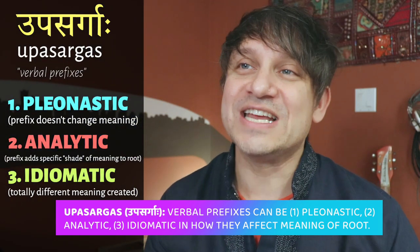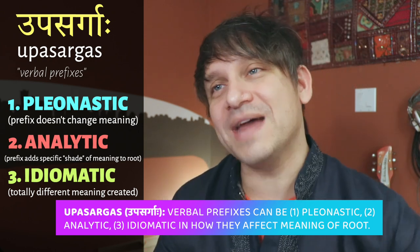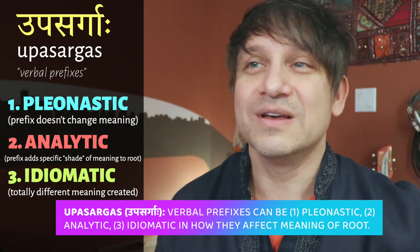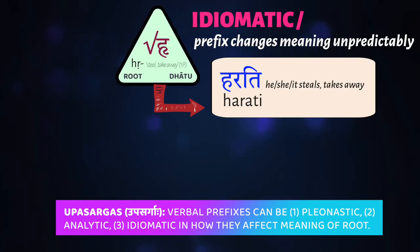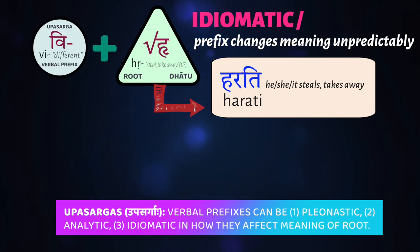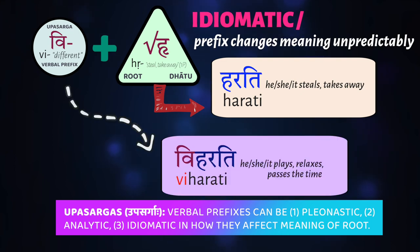Sometimes the prefix changes the root's meaning into a totally different idiomatic meaning that has no relation to the verb or the prefix. One of the most common examples is the root hṛ — harati means 'he/she/it steals or takes away.' Any prefix you add to hṛ generally changes the meaning entirely. If you add vi, which usually means 'opposite or against,' you get viharati, which actually means 'to relax, have fun, play, or pass the time.'